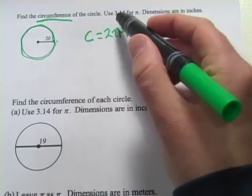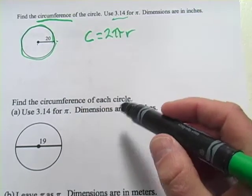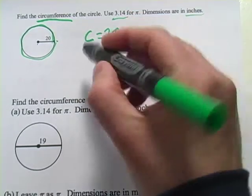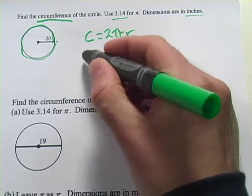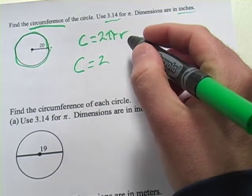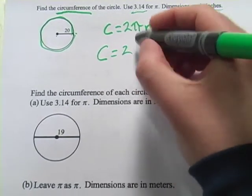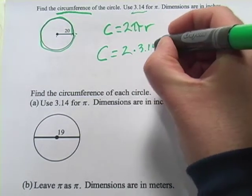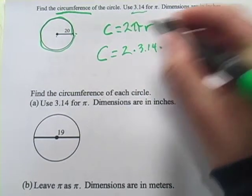So let's find this one. They're telling us to use 3.14 for π, and the dimensions are in inches, so let's go ahead and plug in what we know into our formula. Circumference equals 2 times π, and they want us to use 3.14, so times 3.14, and times the radius, which is 20.